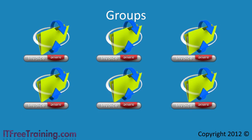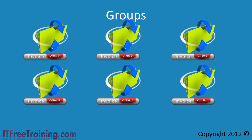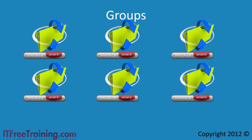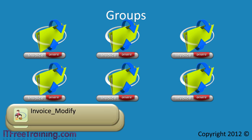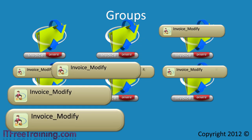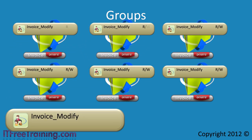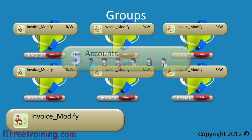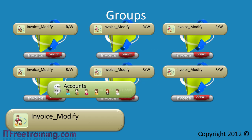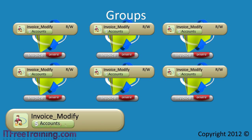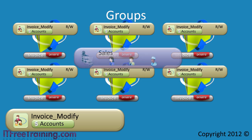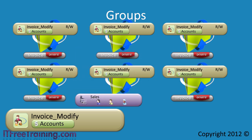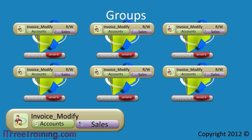This time, instead of assigning the permissions of the share directly to the accounts department, you instead create a new group called invoice modify. This group you assign to all the invoice shares giving it read and write access. Next, you simply need to add the accounts group to the invoice modify group. Placing groups inside other groups like this is called nesting. Once the request comes through for the sales department to have read and write access to the invoice share, you simply add the sales group to the invoice modify group. Easy as that — no need to visit each server again.